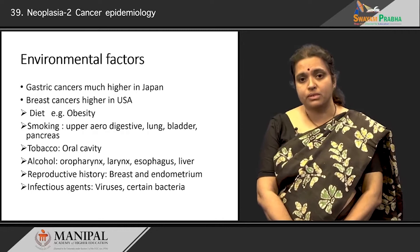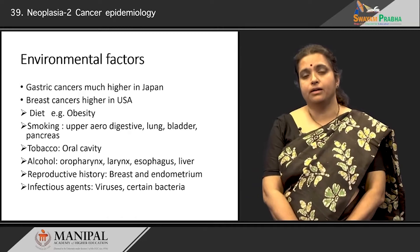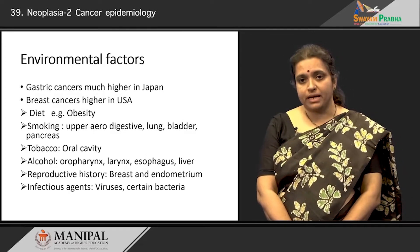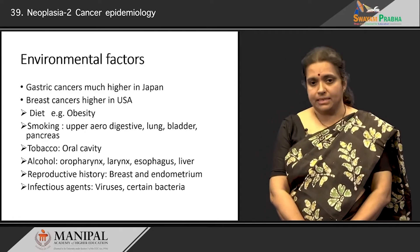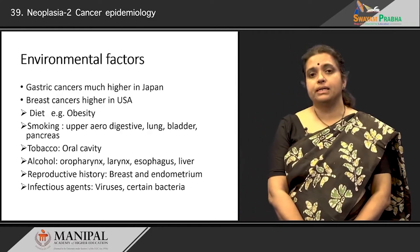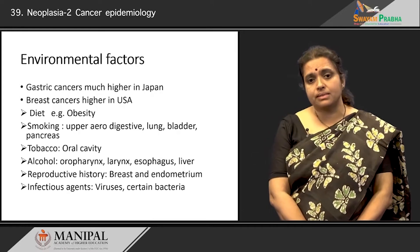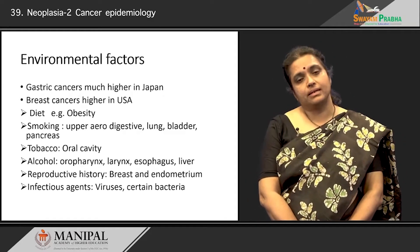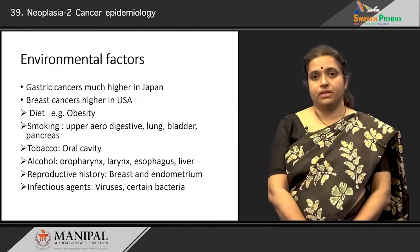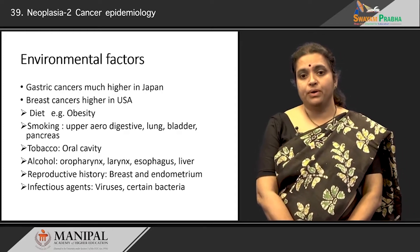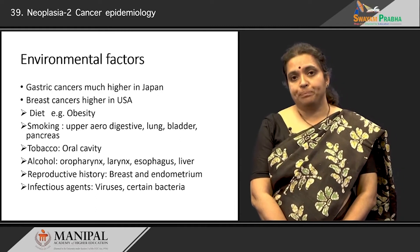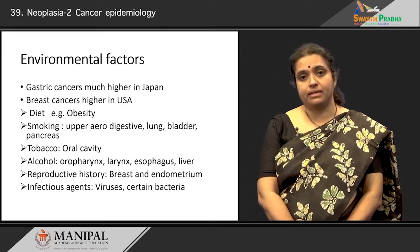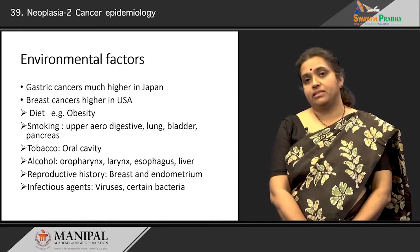Smoking is a highly carcinogenic substance. With smoking you have many kinds of cancers that can develop such as upper aerodigestive cancer, lung cancer, urinary bladder cancer, and pancreatic cancer. Chewing of tobacco, which is quite common in this part of the world, can lead to oral cavity cancers and other upper aerodigestive cancers. Consumption of alcohol has been linked to oropharyngeal cancers, laryngeal cancers, esophageal cancer, and even hepatocellular or liver cancer. Reproductive history also has a role to play — in people with prolonged estrogen exposure, cancers of the breast and endometrium are common. Finally, infectious agents such as certain viruses and bacteria can also cause cancer.